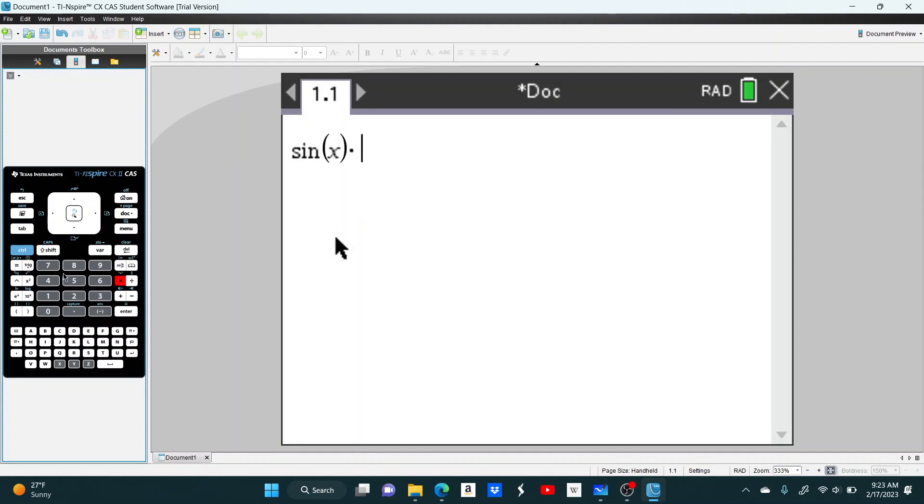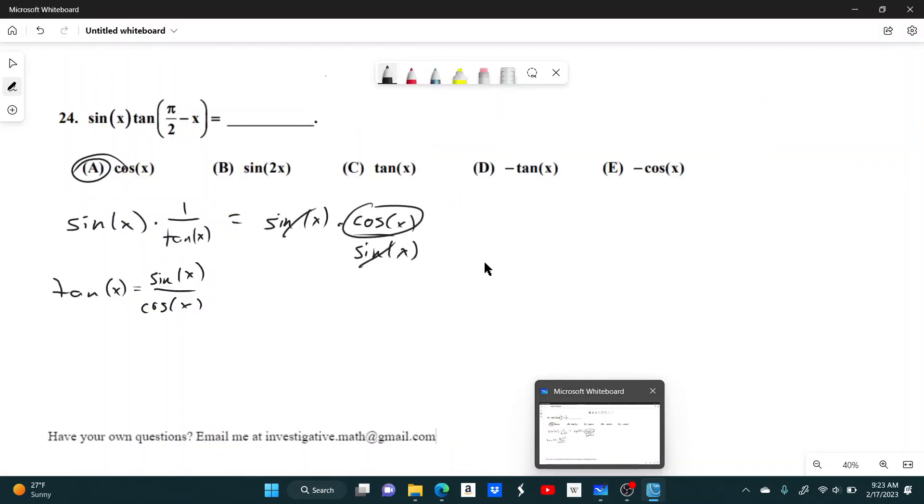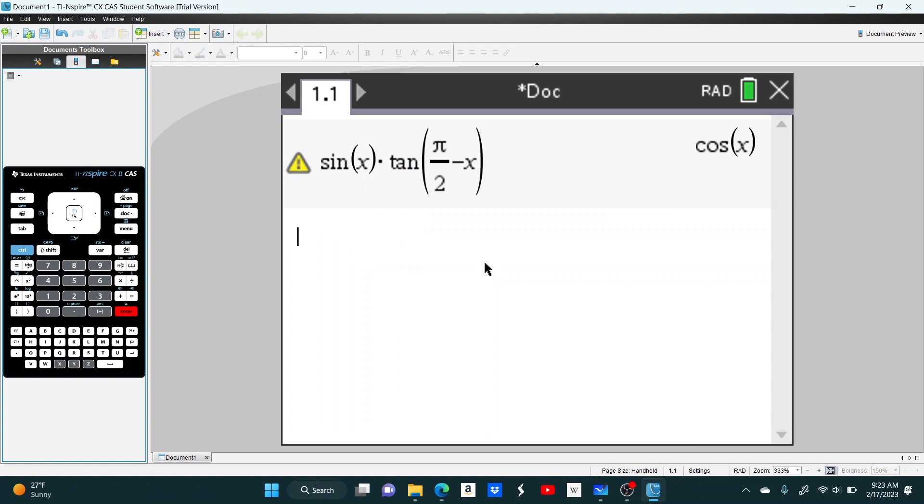So we have sine of x times the tangent of pi over 2 minus x. Is that what it was, or was it x minus pi over 2? No, it was pi over 2 minus x. I just click enter, and you see it simplifies it to cosine of x. So that's pretty nice.